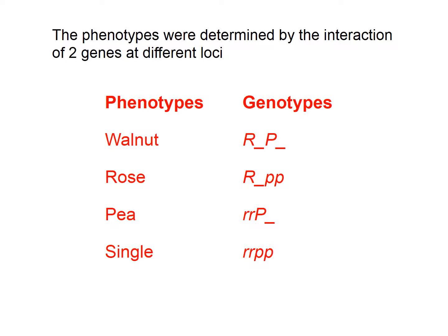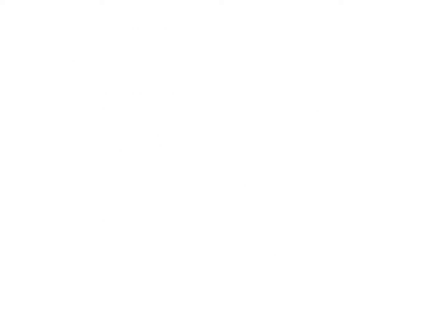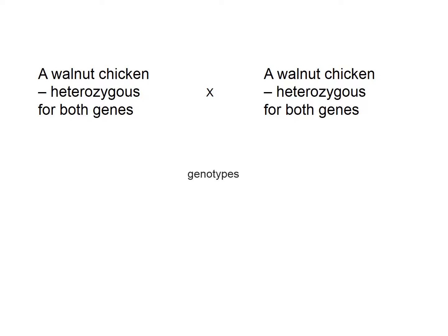Let's look at the genotypes. A walnut chicken, heterozygous for both genes, is crossed with a walnut chicken also heterozygous for both genes. The genotype would be RrPp crossed with RrPp. Work out the gametes — you should have: RP, Rp, rP, and rp, for both parents. Pop these into a Punnett square and work out the genotypes of this generation.